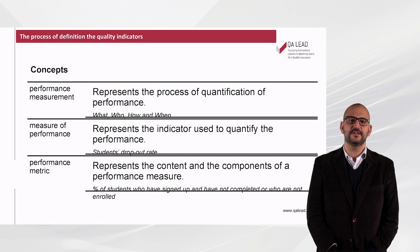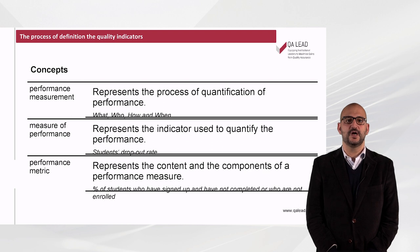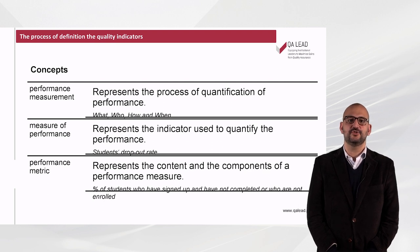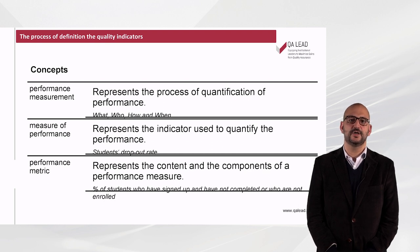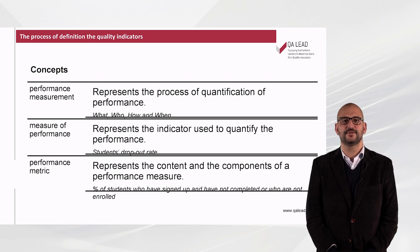Performance measurement basically represents the definition of what should be measured, who should measure, how to measure, and when should this performance be measured. Continuing with the example from our last video — reducing dropout rates through policies for the integration of new students, particularly of first-year students, cutting the rate by 10% in the next three years.